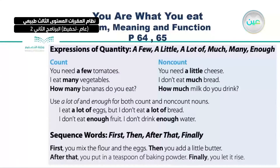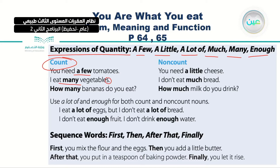We also have more expressions of quantity: few, a little, a lot of, much, many, and of course enough. With countable nouns, we use 'a few' — for example, few tomatoes, few oranges. And if there are many, we say 'I have many vegetables' — using the plural form. In questions, I use 'how many': 'How many bananas do you have?' or 'How many bananas do you eat?'